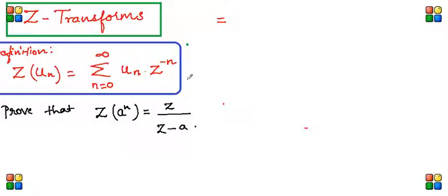So now, to start with the definition, we know that Z(a^n) should be summation n equals 0 to infinity. This u_n should be substituted by a raised to n, the rest remaining the same.